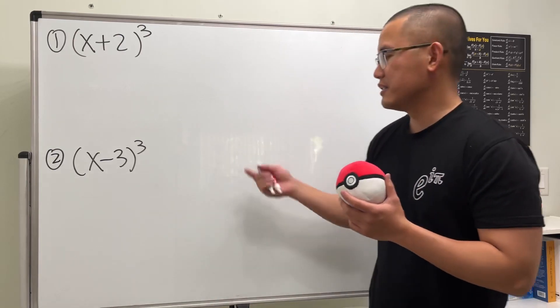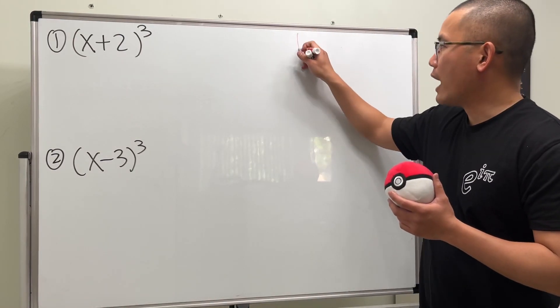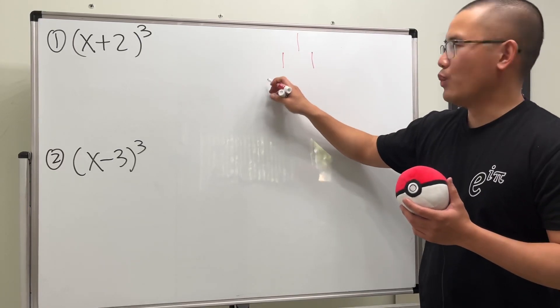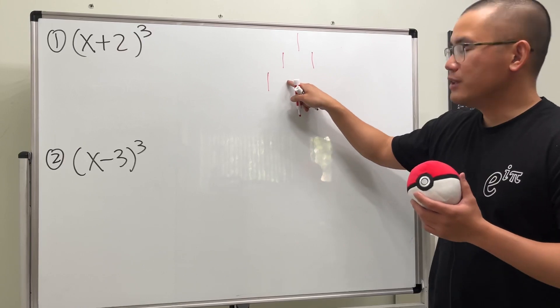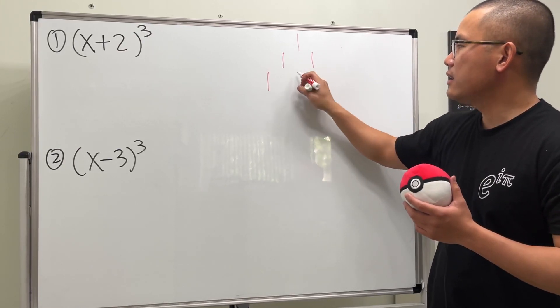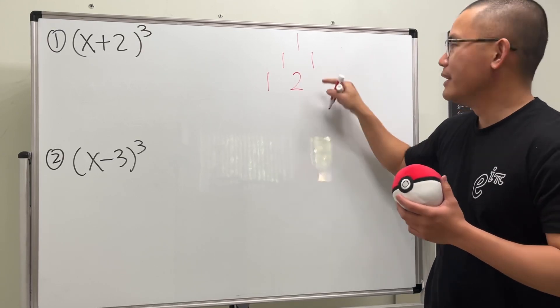Check this out. We first start with one, and then the next row we do one, one. And then you always begin with one. And then for this row right here we have this one already, and for this number we add this and that together which is two, and then you end with one.